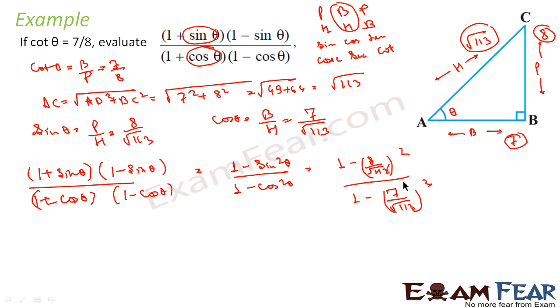We have to find the value of 1 minus sin² θ by 1 minus cos² θ. This is nothing but (1 - 64/113) divided by (1 - 7/113). This becomes (113 - 64)/113 divided by (113 - 7)/113.